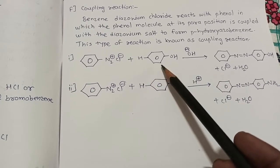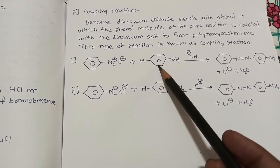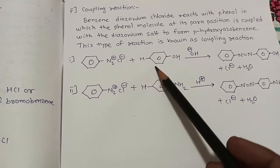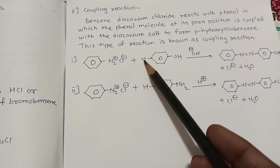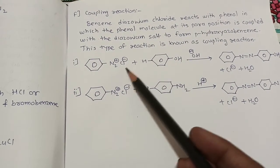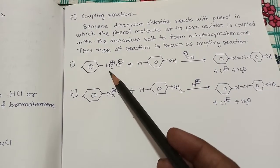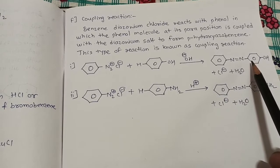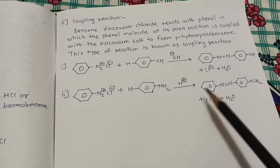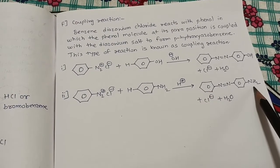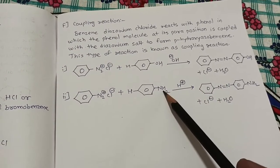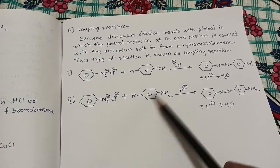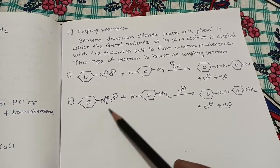To prevent elimination of N₂⁺, we use a compound with an electron-donating group. Phenol has OH as an electron-donating group; similarly aniline has NH₂ as an electron-donating group. Because of this electron-donating group, N₂⁺ does not leave. Instead, H para to the OH couples — HCl goes out and N attaches — giving para-hydroxy azo benzene or para-amino azo benzene. An electron-donating group is essential for coupling to occur.